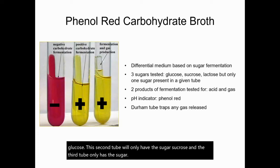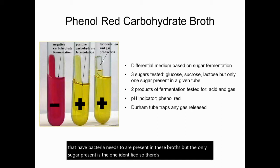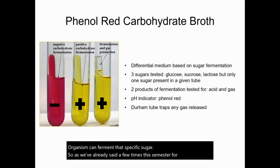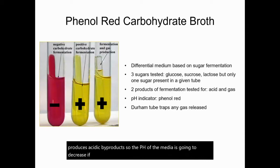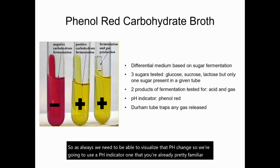All the different things that a bacteria needs to grow are present in these broths, but the only sugar present is the one identified. So there's only one sugar in each of these tubes because we want to determine whether or not the organism can ferment that specific sugar. Fermentation produces acidic byproducts, so the pH of the media is going to decrease if the organism is able to ferment a given sugar. So we need to be able to visualize that pH change, and we're going to use a pH indicator — phenol red.